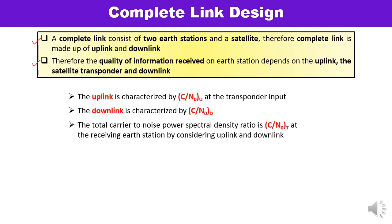The uplink is characterized by the carrier-to-noise ratio at the uplink, at the transponder input. The satellite uplink deals with the power generation at the earth station and the various power gains and losses associated with signals traveling in the upward direction — that is, from the earth station to the satellite. The uplink is characterized by C/N₀ of U.